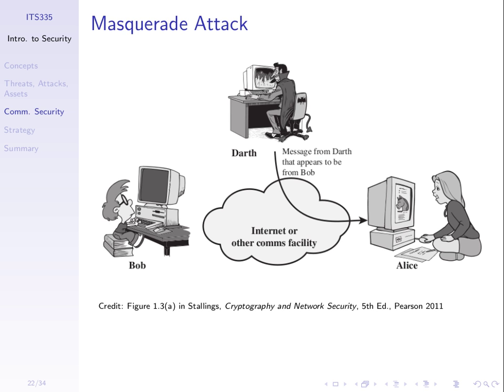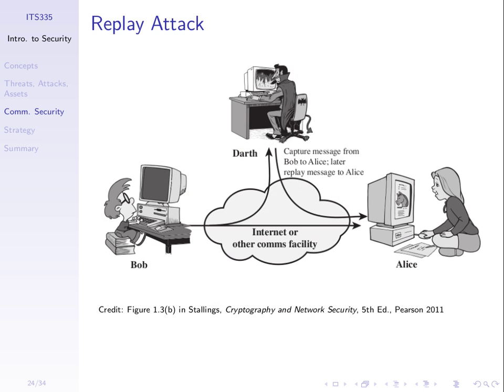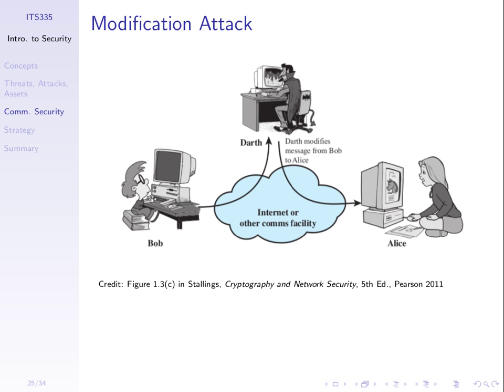We saw that a masquerade attack was quite easy with email, and also with other services. Replay and modification attacks are related to those two — a little more complicated to get working well, because you need to intercept the message before it reaches the destination, but they are possible. The point is, in many cases these attacks are easy to carry out. Therefore we need strong techniques to prevent or detect them, and that's what we'll get onto with the next topic.